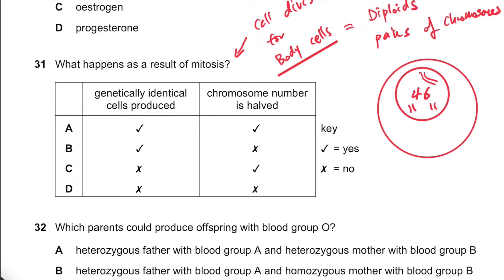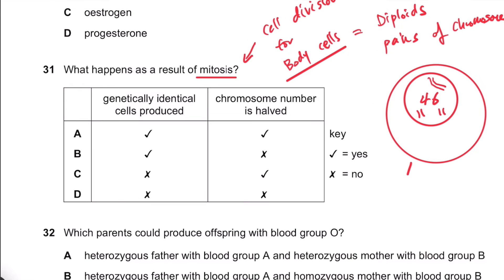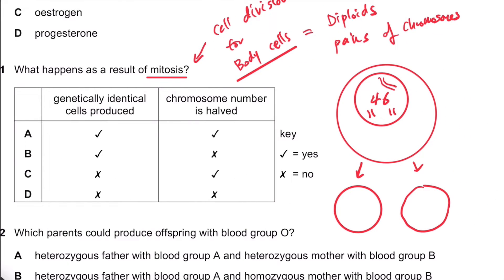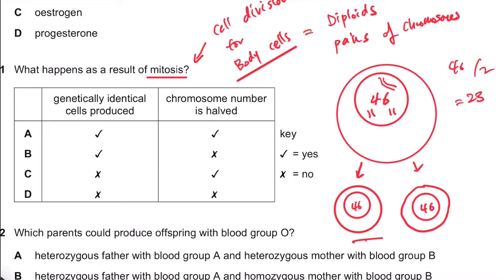So the cell division for body cells, called mitosis, aims to produce many clones of the original. But if you think about it, if you divide 46 chromosomes in half, then you get 23 chromosomes — but how do the daughter cells end up with 46 chromosomes?